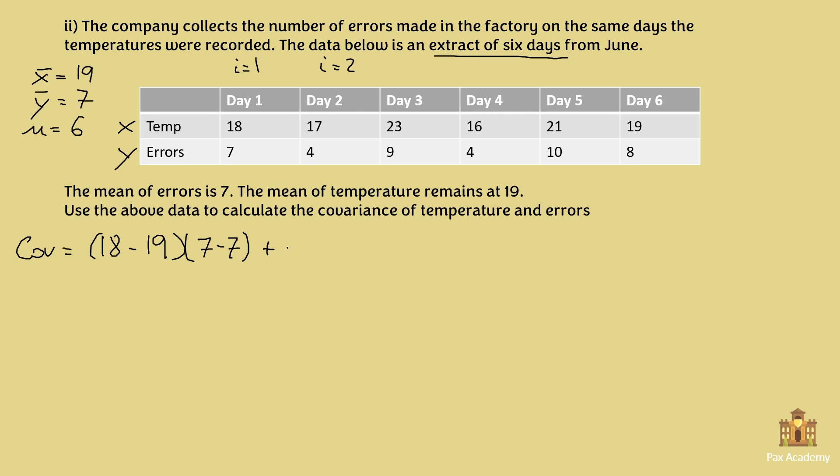So now i is equal to 2. So now we have x2 minus x bar, so 17 minus 19, times 4 minus 7, plus, now day 3, 23 minus 19, and then 9 minus 7, and we carry on. Plus 16 minus 19, times 4 minus 7, plus 21 minus 19, times 10 minus 7, plus 19 minus 19, times 8 minus 7.